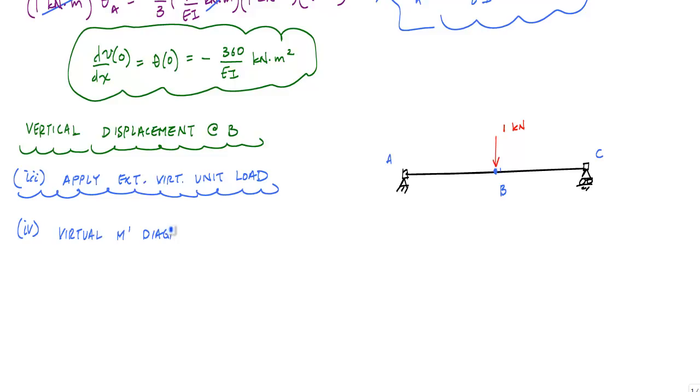which again involves a free body diagram, reactions, and then drawing the shear and moment diagrams. I want to draw my free body diagram here, so I'm going to have reaction, vertical, and horizontal. And if I use sum of the forces in the horizontal, I'll find that AX prime is 0.